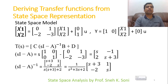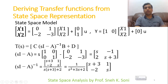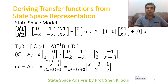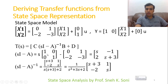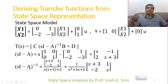The state model is given as: x-dot = A·[x1, x2]ᵀ + B·u, and y = C·[x1, x2]ᵀ + D·u. We need to convert this to a transfer function. We apply the equation C(sI − A)⁻¹B + D, first calculating (sI − A). We write s times the 2×2 identity matrix minus matrix A, which simplifies to the matrix [s, −1; 2, s+3].